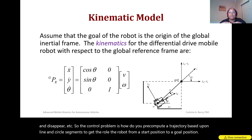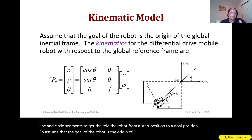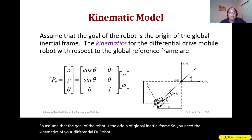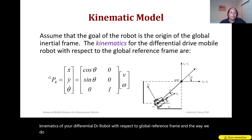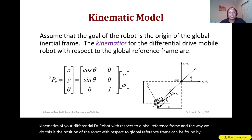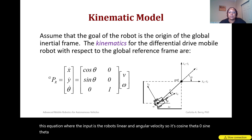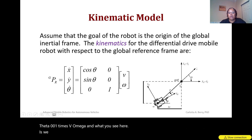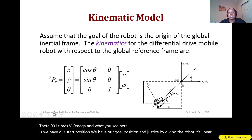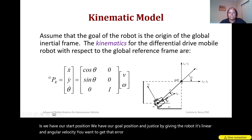Assume the goal of the robot is the origin of your global inertial frame. You need the kinematics of your differential drive robot with respect to the global reference frame. The position of the robot with respect to the global frame can be found using the equation where the input is the robot's linear and angular velocity: cosine theta, zero, sine theta, zero, zero, one, times v and omega. You have your start position and your goal position, and by giving the robot its linear and angular velocity you want to drive the error between current position and goal to zero.